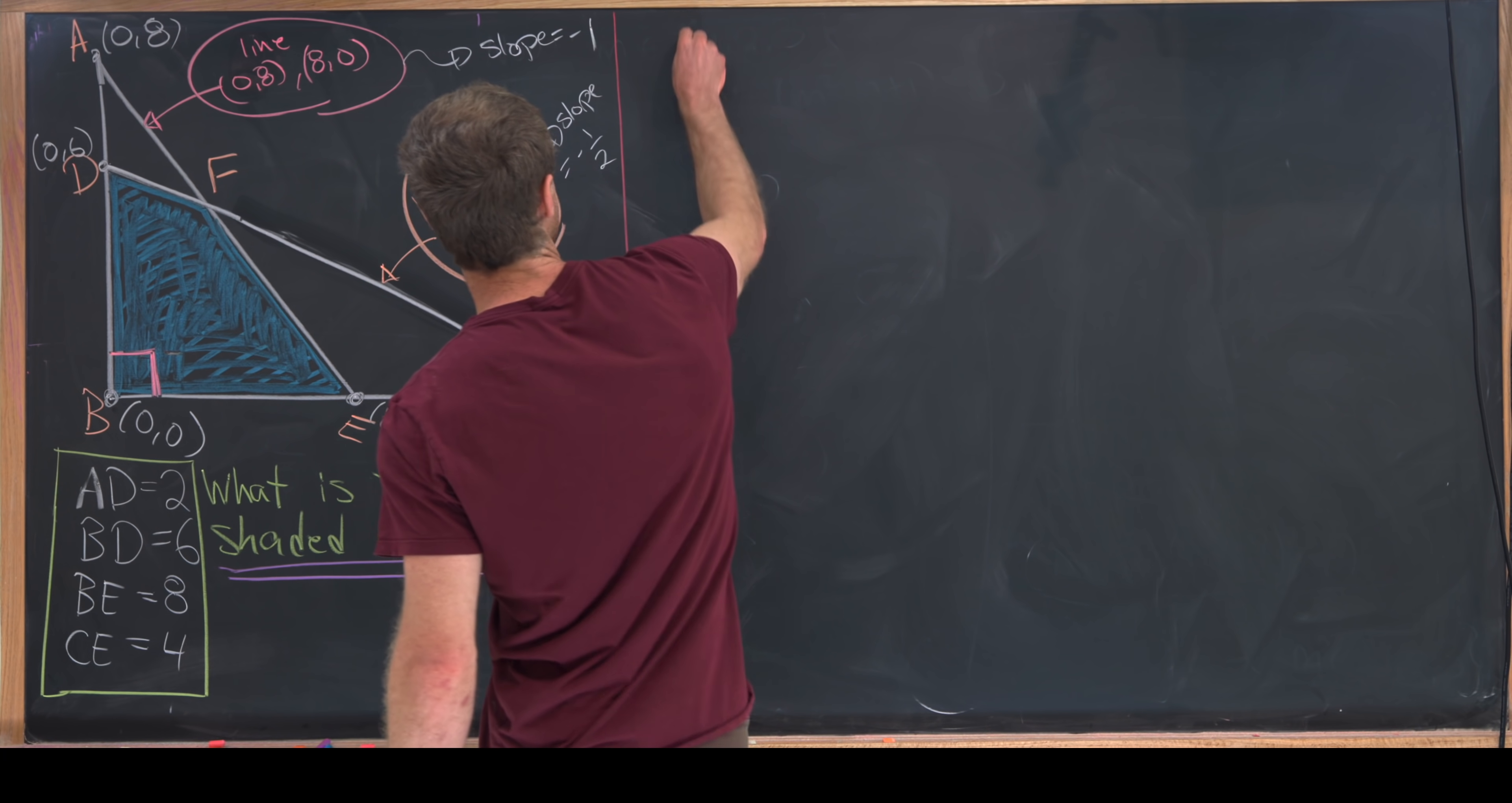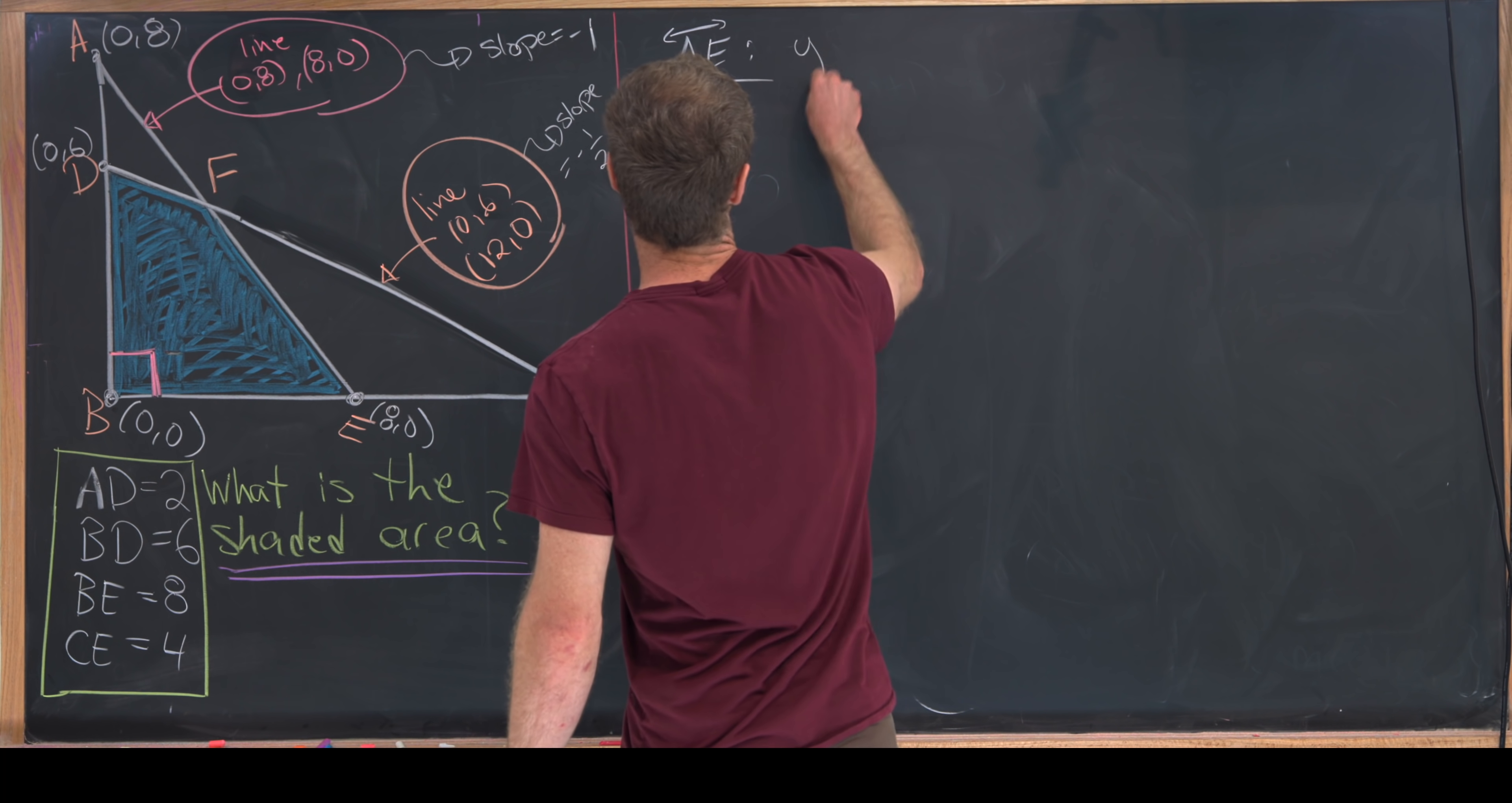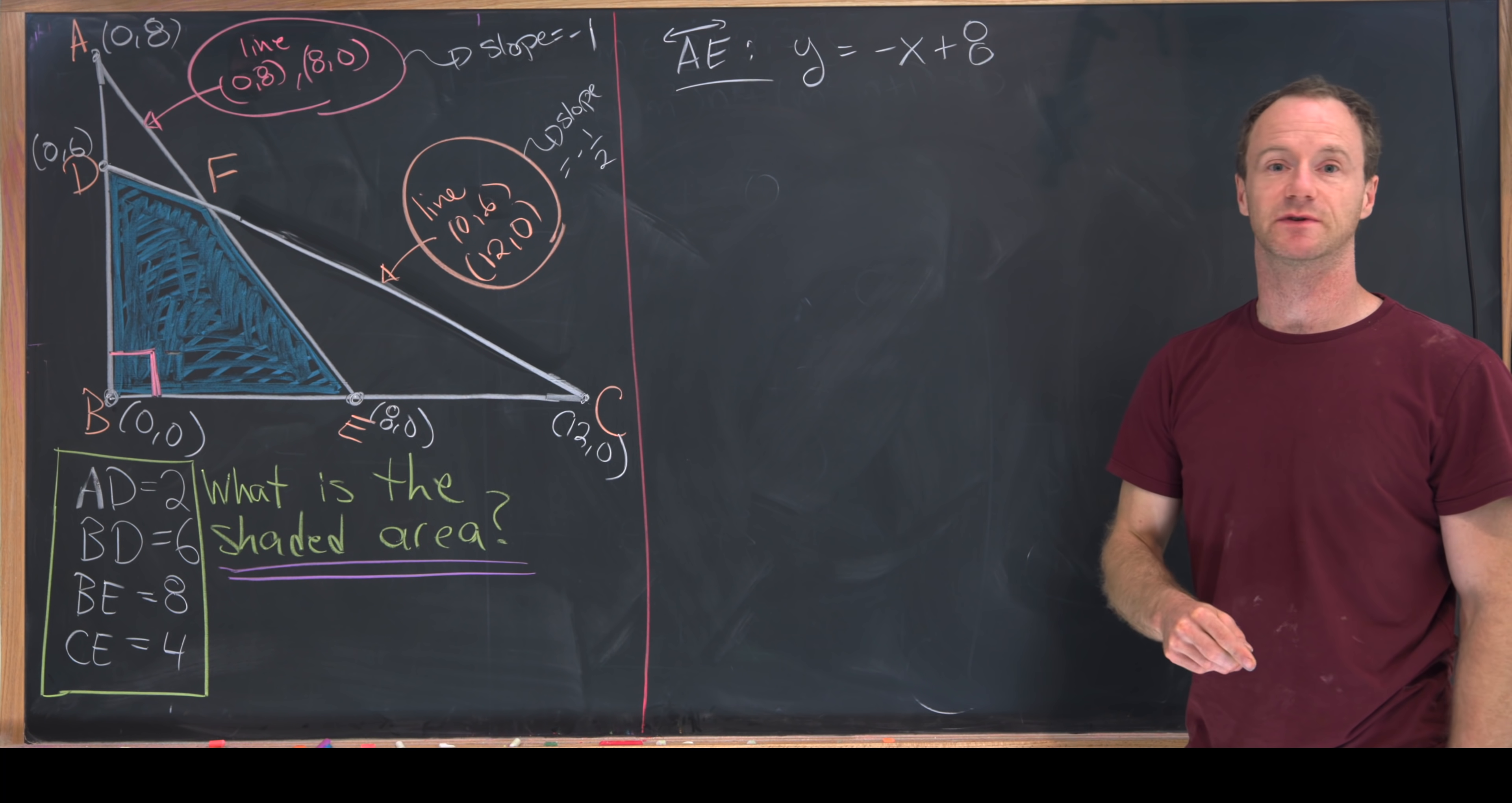That means that this line AE, which is the hypotenuse of the more upright triangle, has equation given by y = -x + 8, because that obviously has a y-intercept of 8.